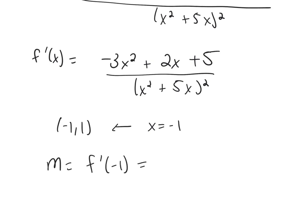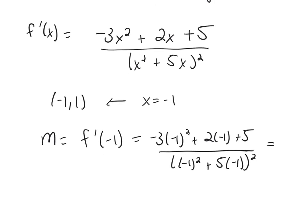Let's plug in negative 1. Negative 1 squared plus 5 times negative 1 all squared. And if you compute the numerator, you'll see that you get 0.